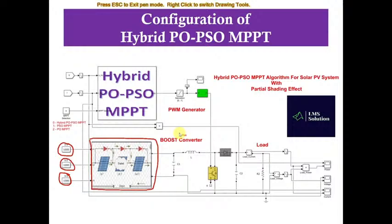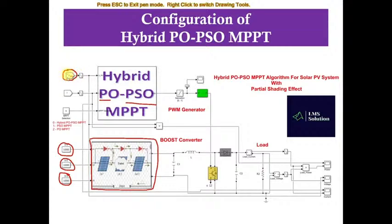In order to overcome this problem, you can combine PO and PSO. When combining PO and PSO, it will solve the problem of PO MPPT as well as PSO MPPT — it can find the global maximum point quickly. For that purpose we go for hybrid PO-PSO MPPT. The PO-PSO MPPT receives two inputs: PV panel voltage and PV panel current.